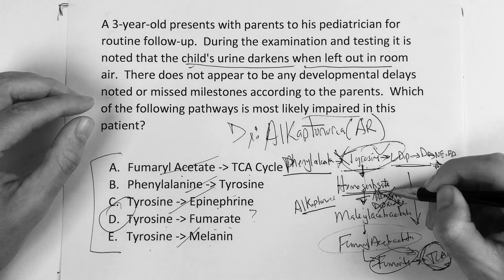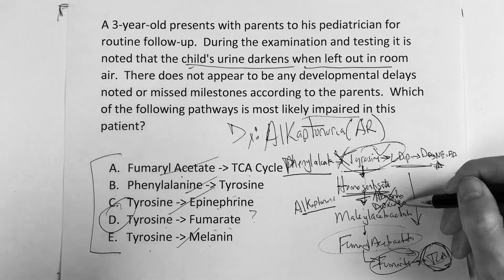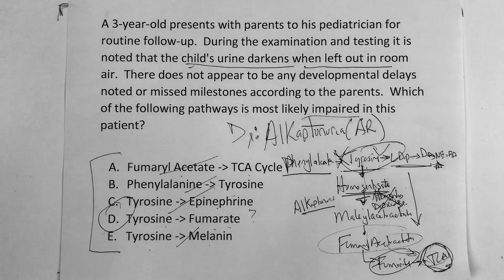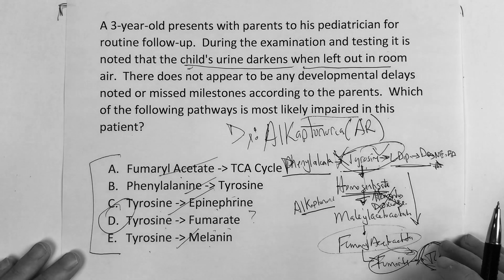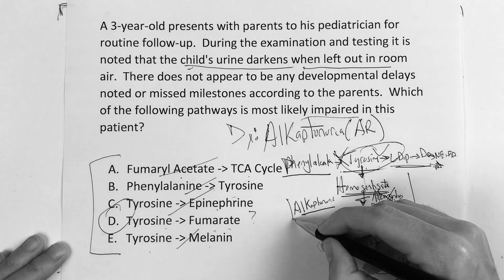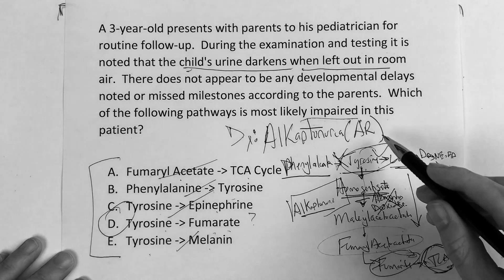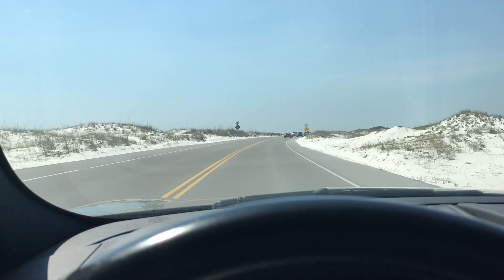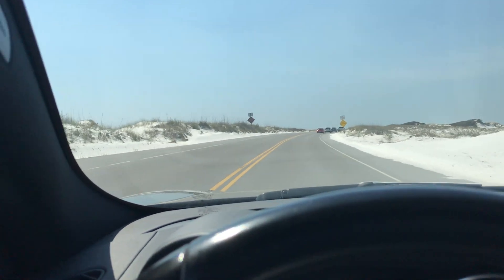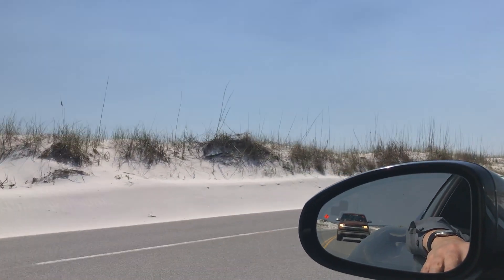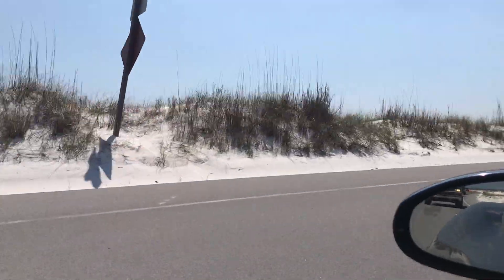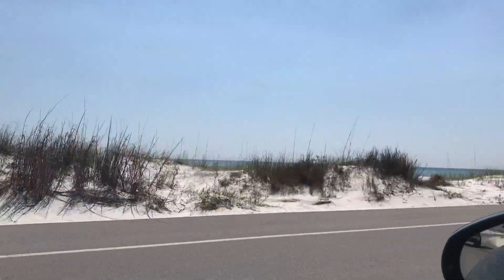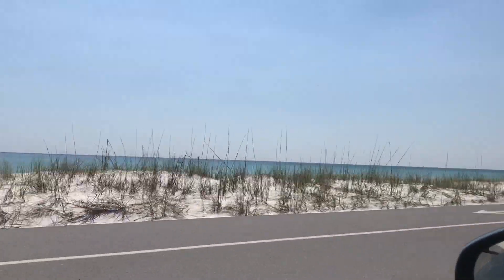Homogentisate or homogentisic acid builds up because you don't have the homogentisate dioxygenase. I'm hoping I got that right — I had thought it was deoxygenase. But nevertheless, we know it's alkaptonuria, and you've got to know the pathways. I hope it's helpful, guys. Thank you.